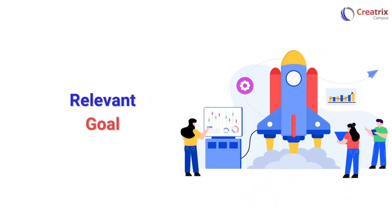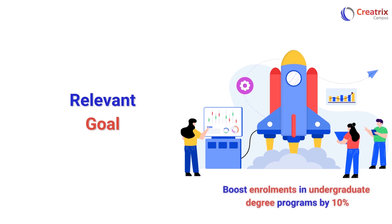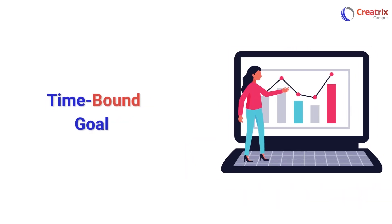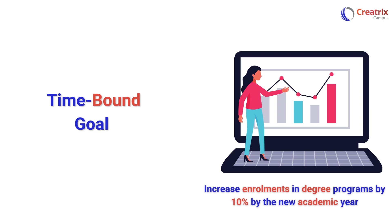Next is making your goal relevant: we will use Facebook advertising to boost enrollments in our undergraduate degree programs by 10%. The last step is making your goal time-bound: we will use Facebook advertising to increase enrollments in our degree programs by 10% by the new academic year.